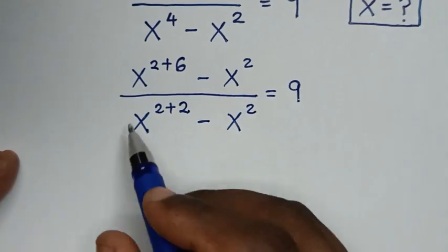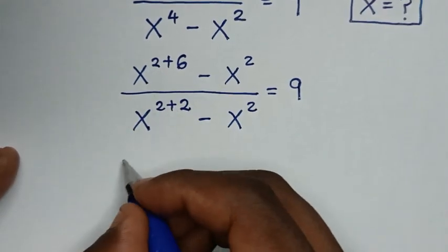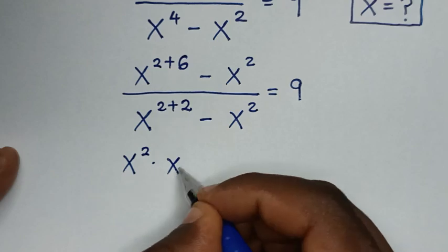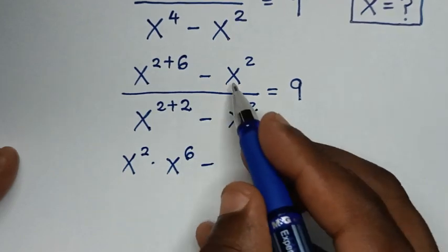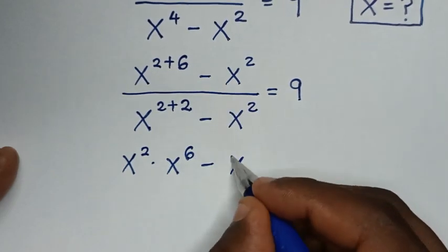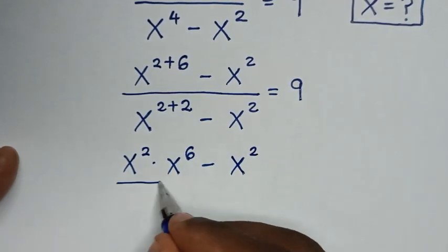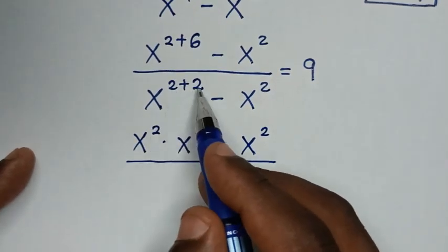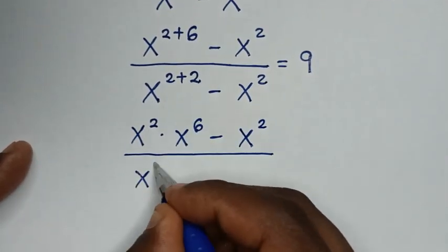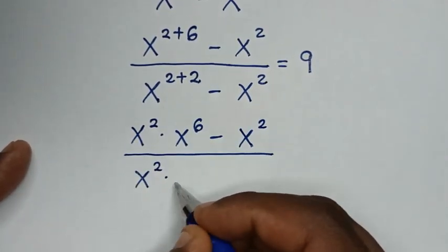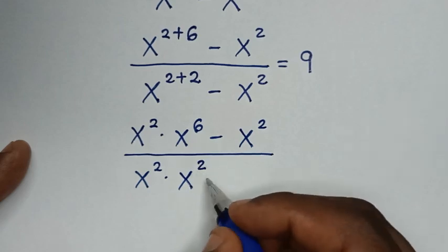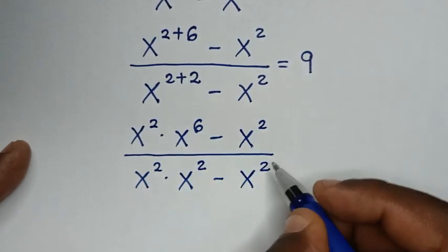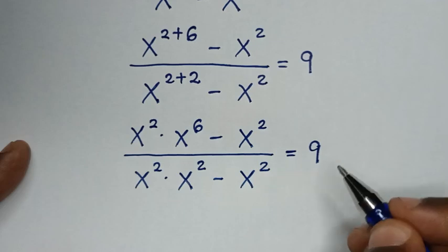From here, x power of 2 plus 6 is same as x power of 2 times x power of 6. Then, minus this x power of 2. Over, x power of 2 plus 2 is same as x power of 2 times x power of 2. Then, minus this x power of 2 is equal to 9.